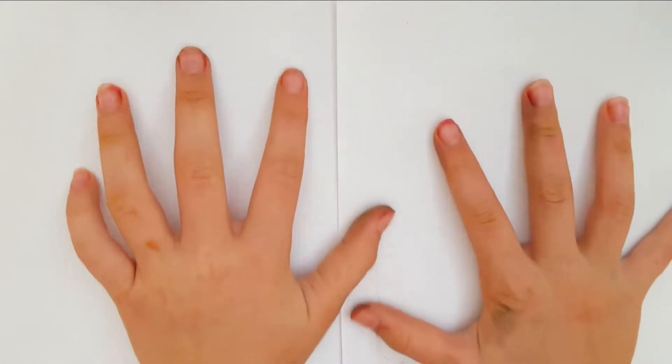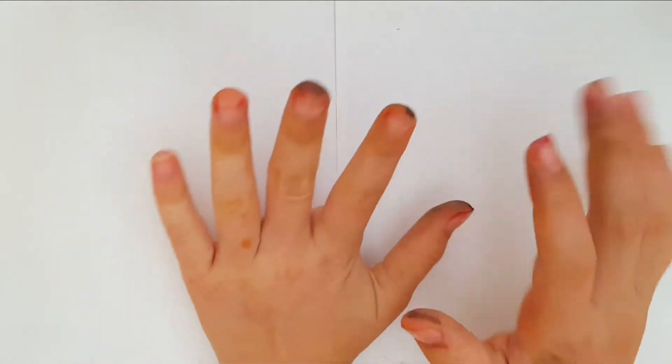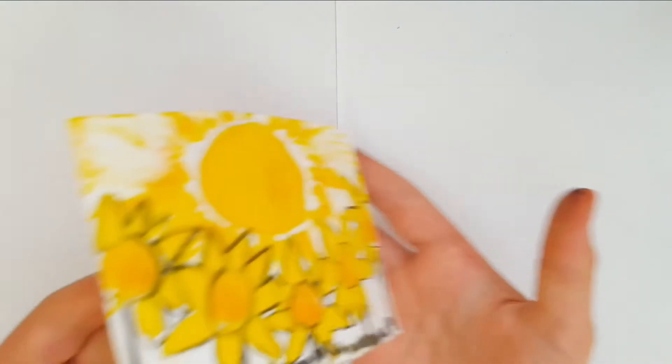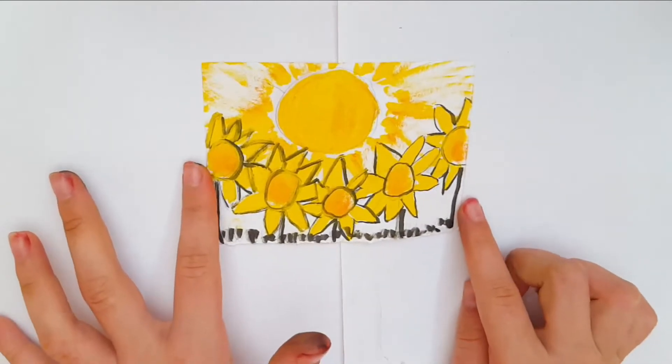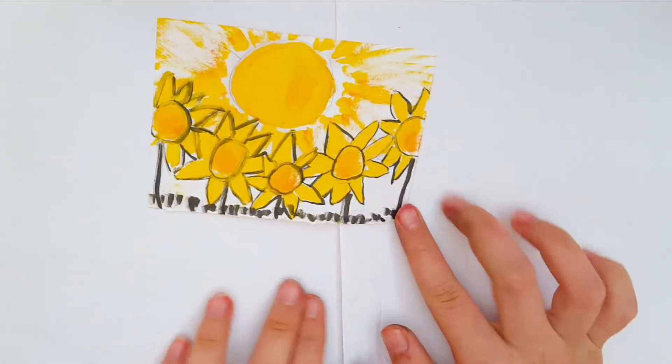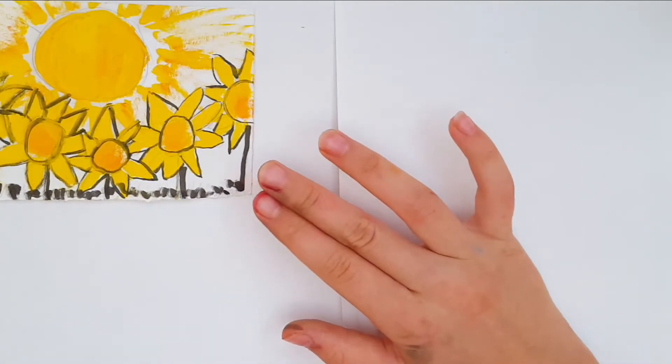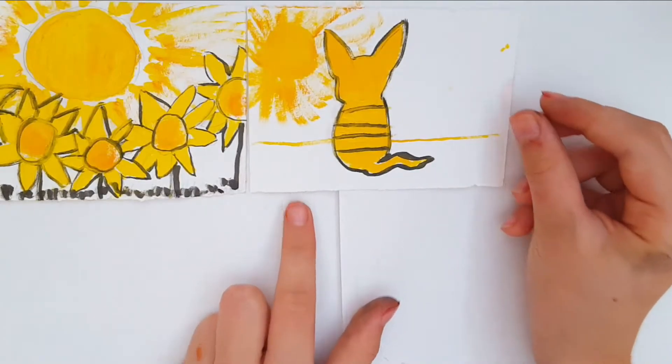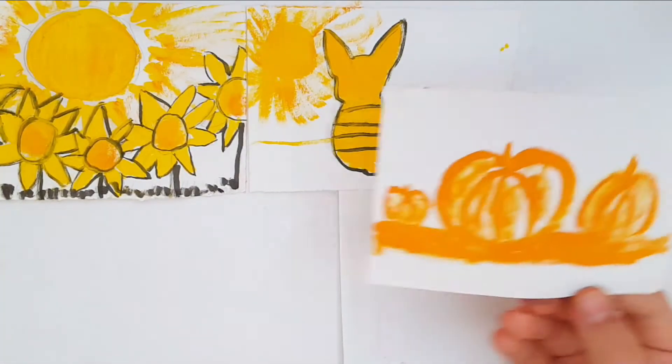You can see by my hands that they're really dirty, so sorry about that. I was just painting. Let me show you the first one. This is day one which is bright yellow. I thought of sun and sunflowers, and I outlined it with black as you can see.